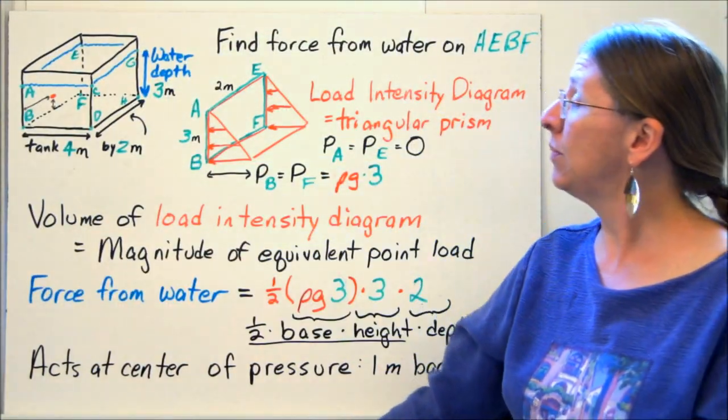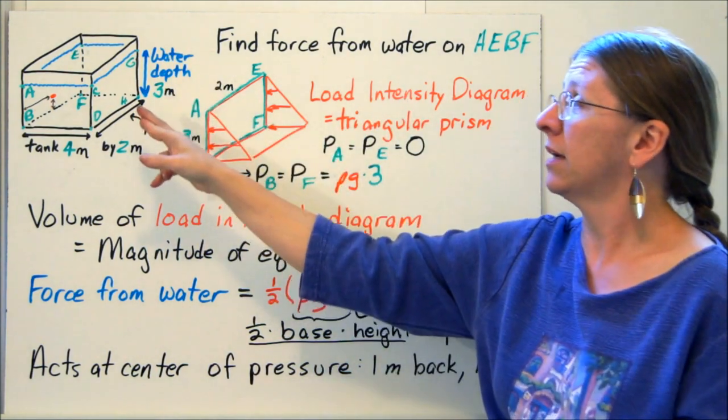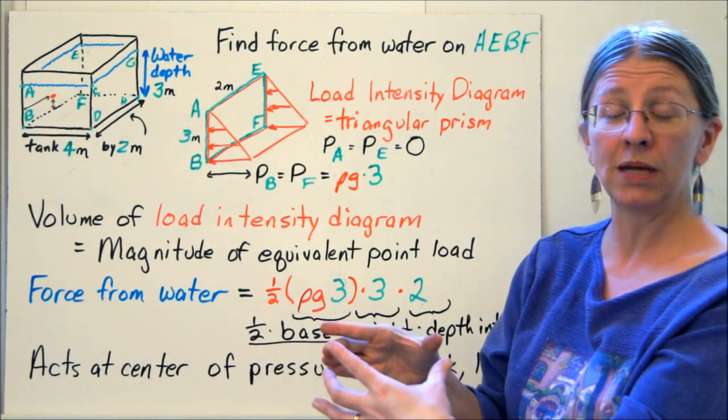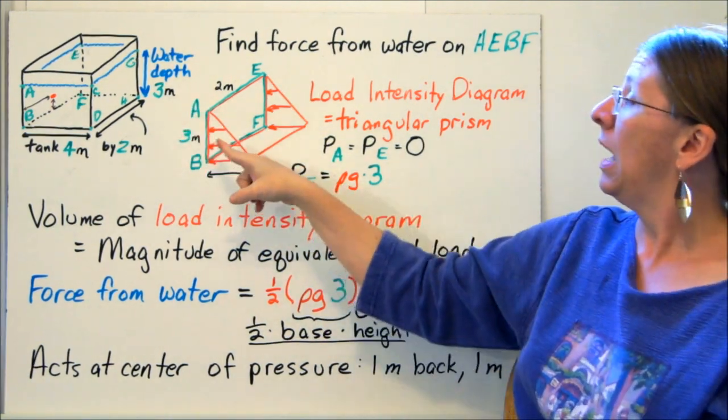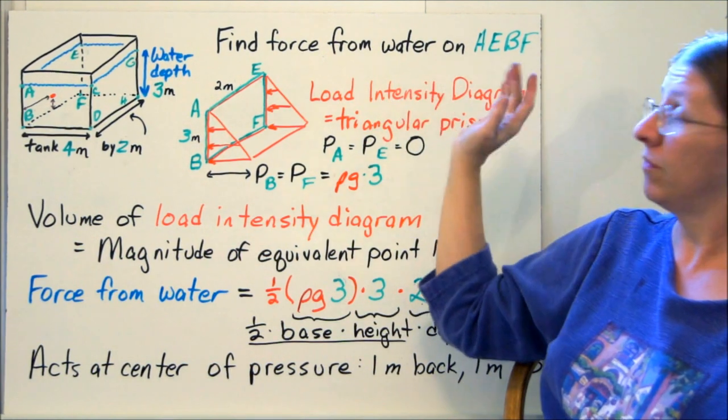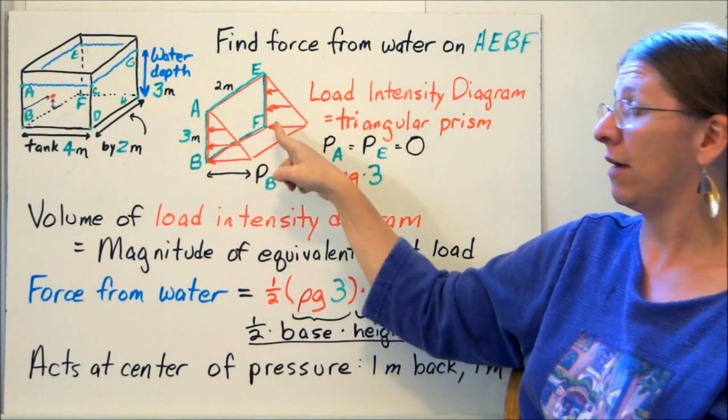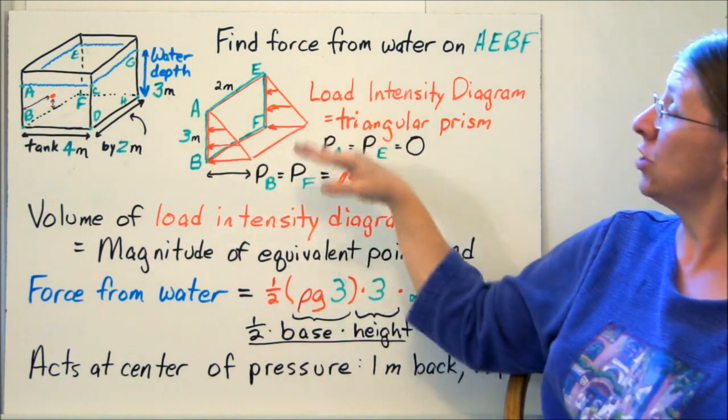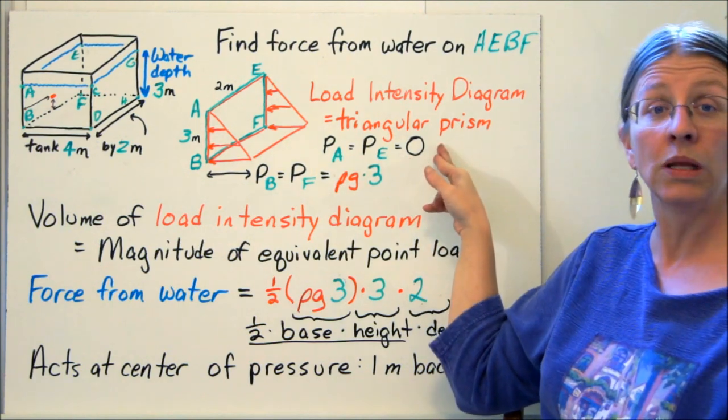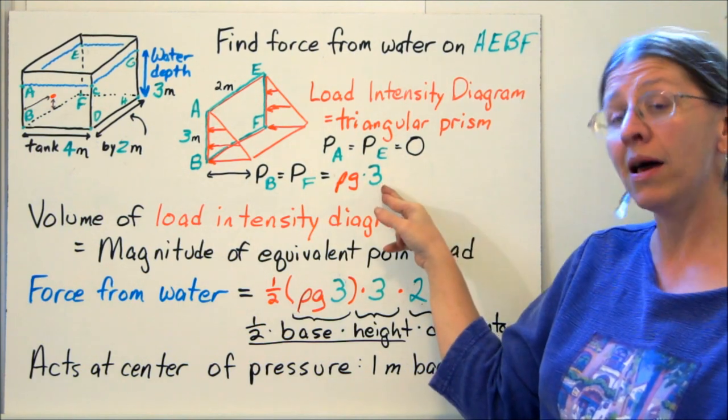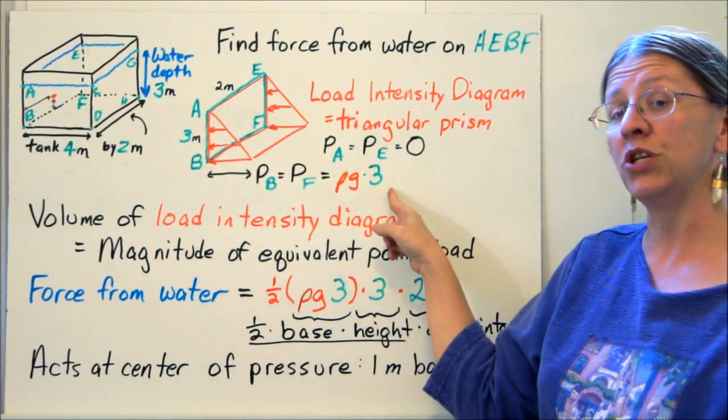So the first example to do is one tank full of water. If you look at this water tank, I have 4 feet by 2 feet. I have 3 feet of water in it here. I'm looking for the force from the water on the left-hand side. So I have the side AEBF. The pressure at the top, the top surface of the water is going to be 0, and it's going to be 0 all the way along. The pressure at the bottom only depends on the depth. So the pressure at the bottom at both B and F is ρg times 3.